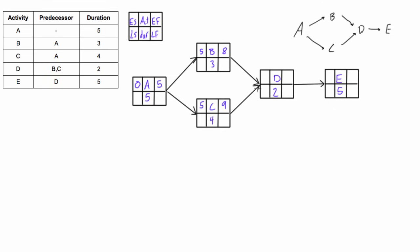Now where two activities converge onto one, we have to on the forward pass pick the larger value. Because activity D here depends on activity B and C, it can't start until activity B and C are both done. So if we started on the eighth day, activity C wouldn't be done yet, so we have to pick the ninth day. So we put the nine here and then we add two so we get 11. And then we bring the early finish again to the early start of the next one, so we bring the 11 over and 11 plus 5 is 16.